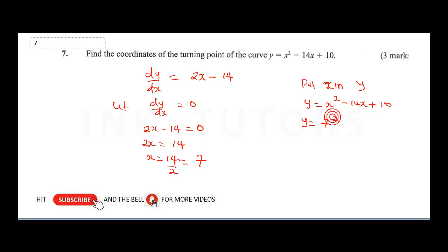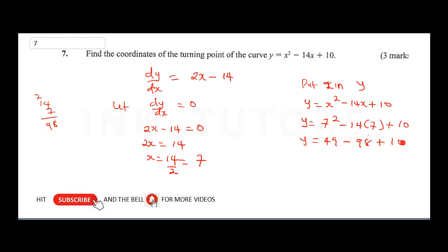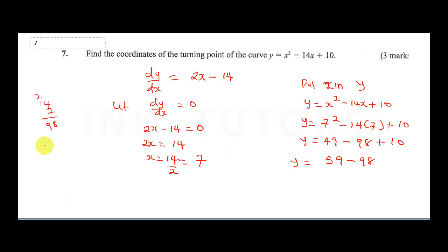Substituting x equals seven: y equals seven squared minus 14 times seven plus ten. Seven squared is 49, and 14 times 7 is 98. So y equals 49 minus 98 plus 10, which is 59 minus 98.